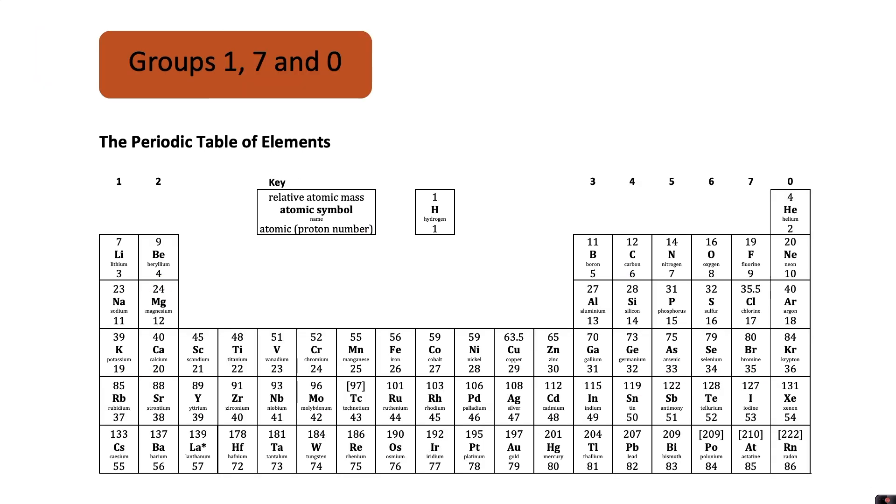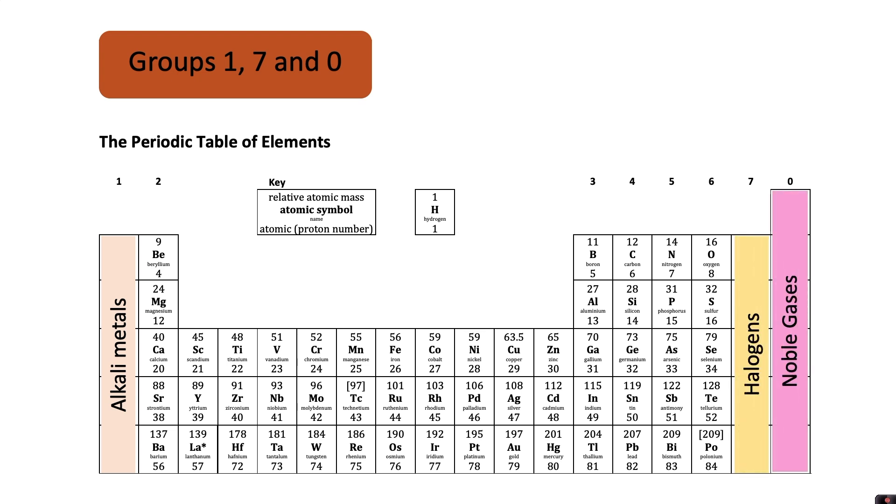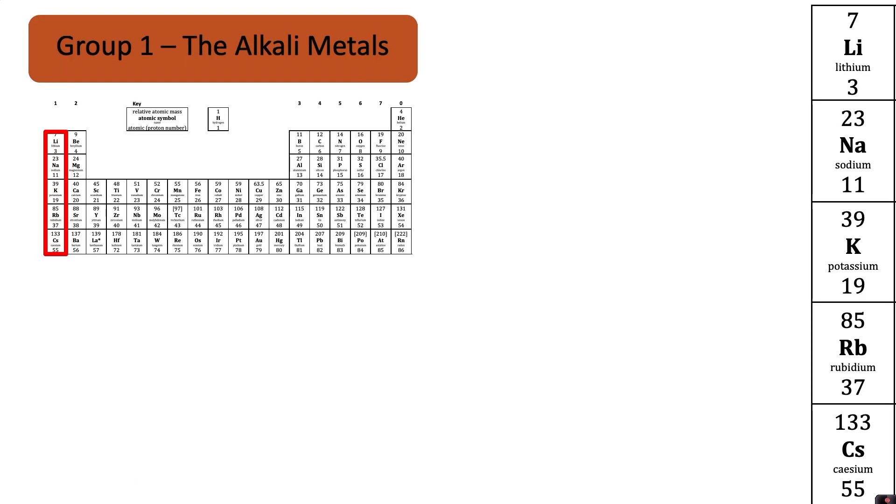We're going to look in more detail at groups one, seven and zero. Group one being the alkali metals, group seven the halogens and group zero the noble gases. Starting off by looking at group one the alkali metals.